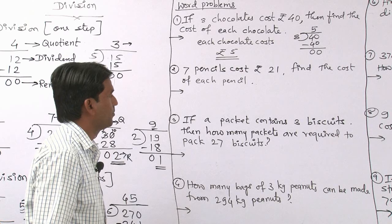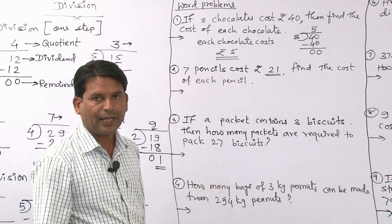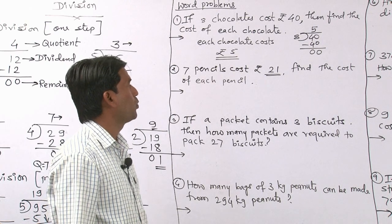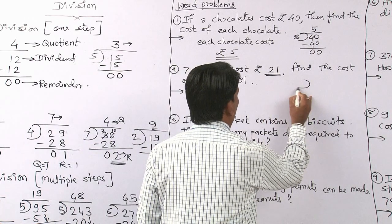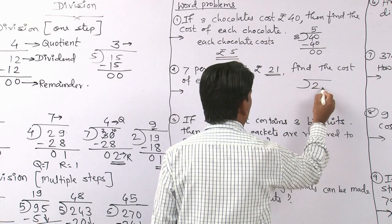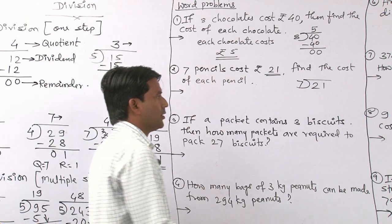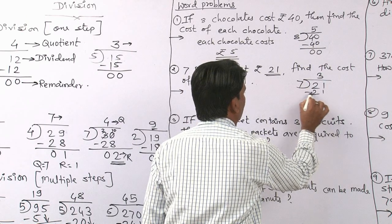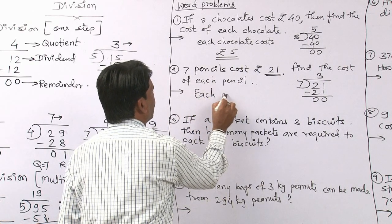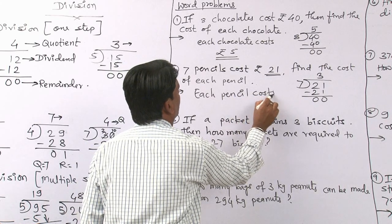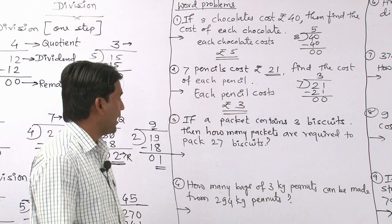Next, second one: 7 pencils cost rupees 21. We have to find the cost of each pencil. For that we again do division: 21 divided by 7. Does 21 appear in the 7 table? Yes — 7 threes are 21. So the answer is 3. Each pencil costs rupees 3.